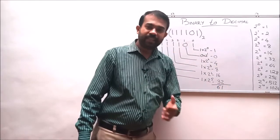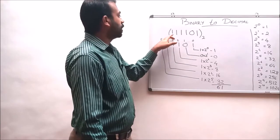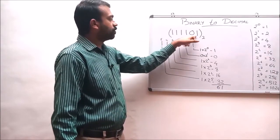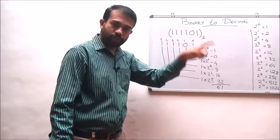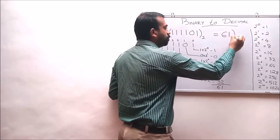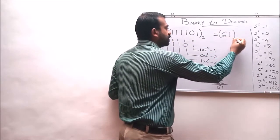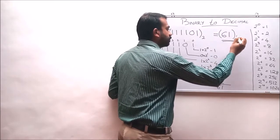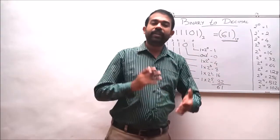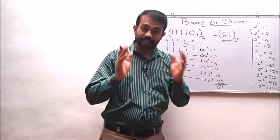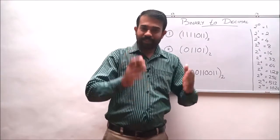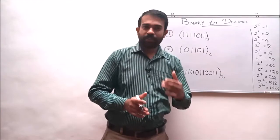So the decimal equivalent of the binary number 111101 to the base 2 is 61 to the base 10. This is how we convert a binary number into its decimal equivalent. Dear students, I hope you have understood this topic.